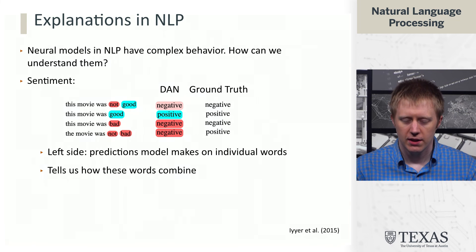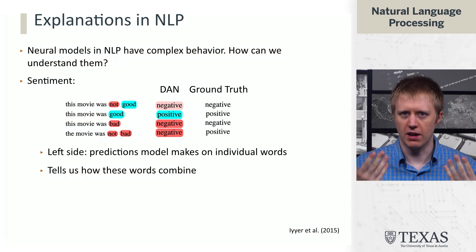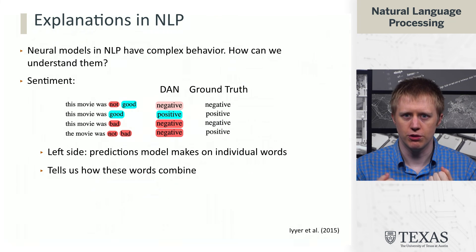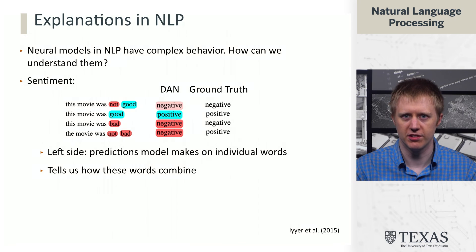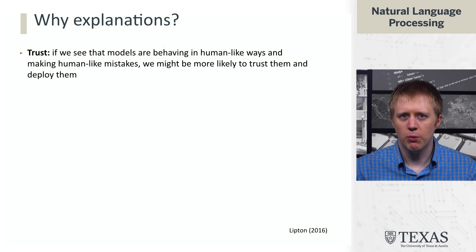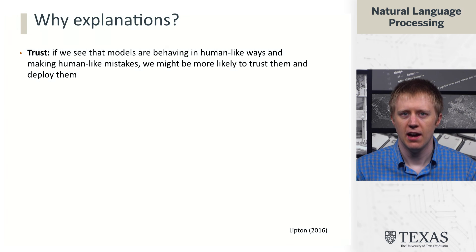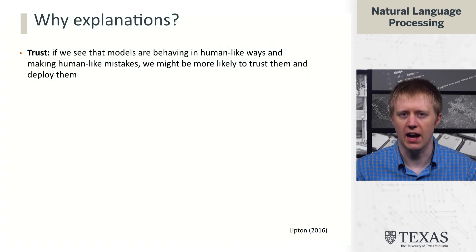It would be useful if we could take our models and generally try to produce an explanation of why they make the decisions they make. What exactly do we want from explanations, and what should they be able to tell us? These are some bullets taken from Zach Lipton's paper on the mythos of model interpretability, which outlines some of the factors and why we really care about explaining our models.